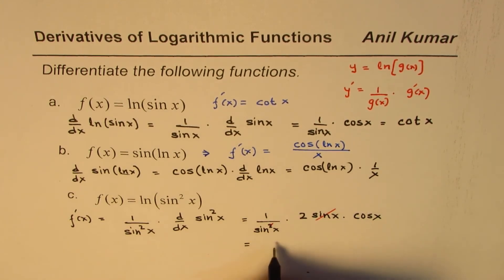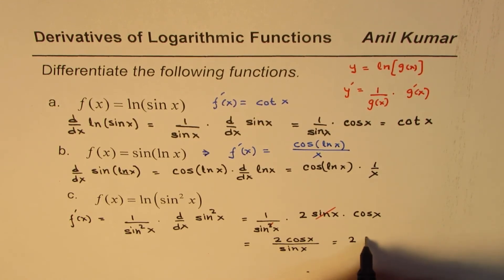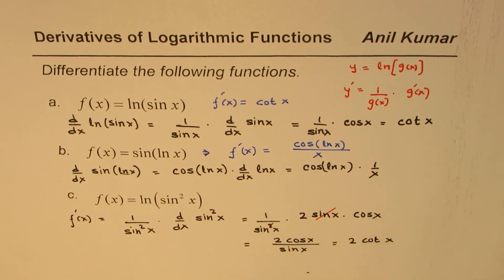So you are left with 2 cos x over sine x which is 2 cotangent x.